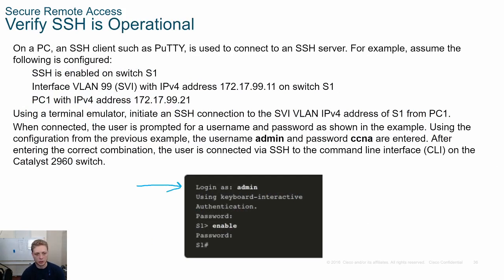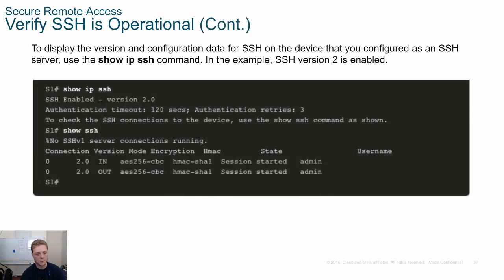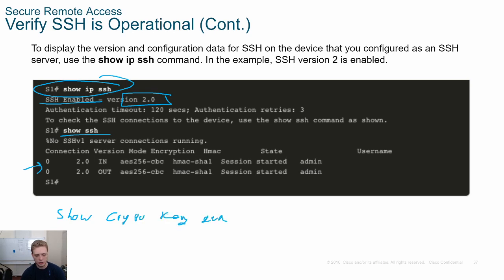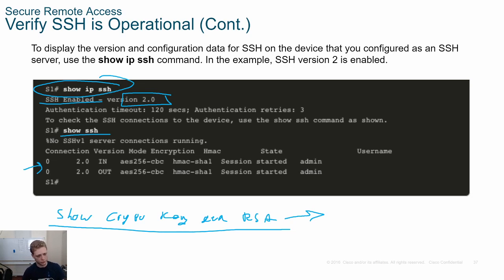Verify SSH is operational by logging in from an application such as PuTTY. On Linux you can use a native SSH client in a terminal window. You can also run 'show ip ssh' to confirm SSH is enabled and running version 2.0, and 'show ssh' to see active connections. Additionally, use 'show crypto key mypubkey rsa' to verify the RSA keys were generated — useful for troubleshooting SSH issues.